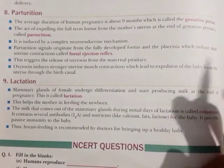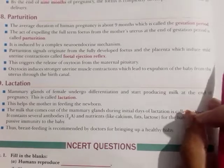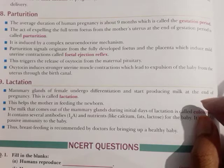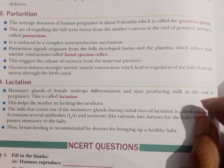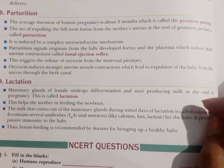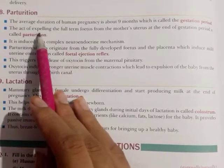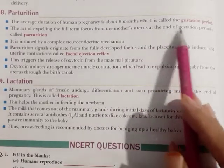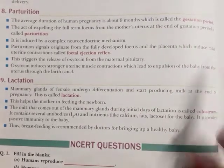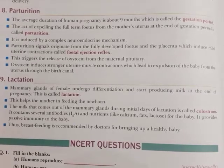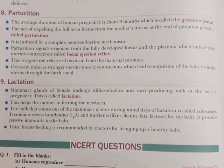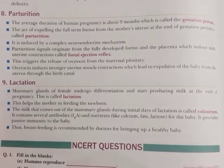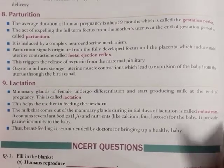When the fetus is fully developed, childbirth occurs — this is called parturition. The act of expelling the full-term fetus from the mother's uterus at the end of the gestational period is called parturition. It is induced by a complex neuroendocrine mechanism.